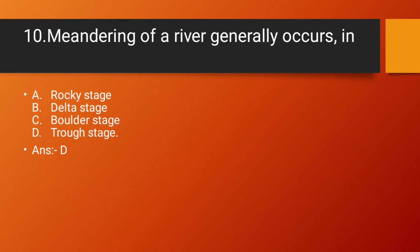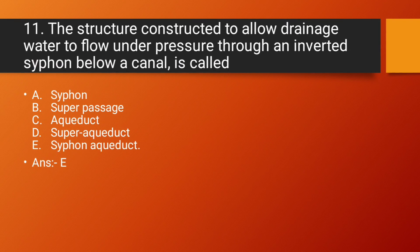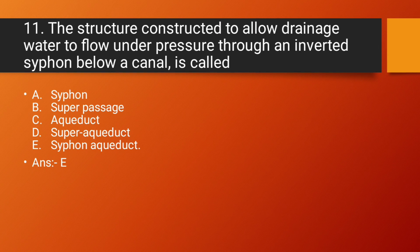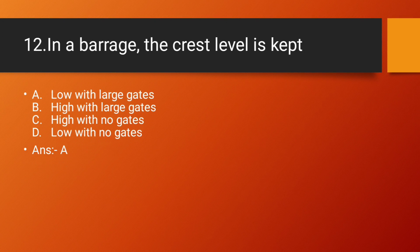Question number 10: Meandering of a river generally occurs in the trough stage. Answer: trough stage. Question number 11: The structure constructed to allow drainage water to flow under pressure through an inverted siphon below a canal. Question number 12: In a barrage, the crest level is kept low with large gates.